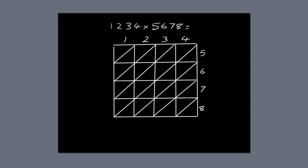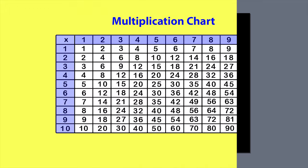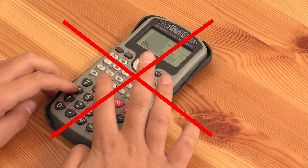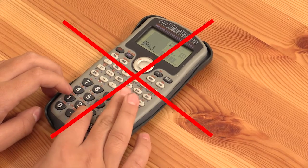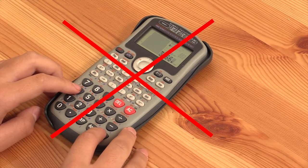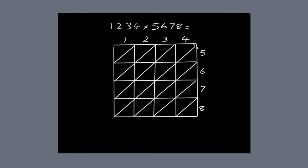Now we're ready to do some multiplication and fill in the blanks with our answers. You'll need to know your times tables. If you're stuck, you can look up a multiplication chart, but you can't use a calculator, because you're a rabbit. I'm just going to start multiplying and show you how to fill in the blanks. Let's start with the top right-hand corner, although you could start anywhere else if you want to.